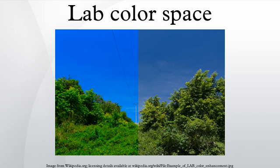The nonlinear relations for L*, A*, and B* are intended to mimic the nonlinear response of the eye. Furthermore, uniform changes of components in the LAB color space aim to correspond to uniform changes in perceived color, so the relative perceptual differences between any two colors in LAB can be approximated by treating each color as a point in a three-dimensional space and taking the Euclidean distance between them.